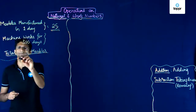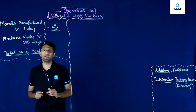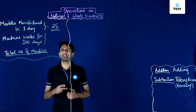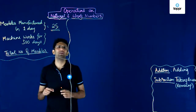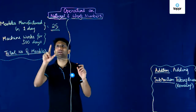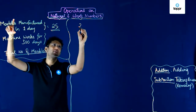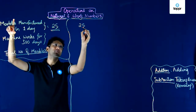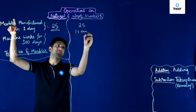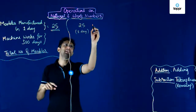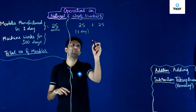This can be done by what we have already learned. We have already learned addition, so this can also be done by addition. Let us see the scenario. In one day, 25 marbles have been made — this is the count for the first day. On the second day, again 25 marbles will be made.